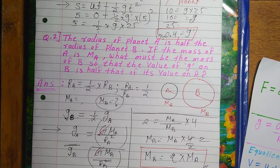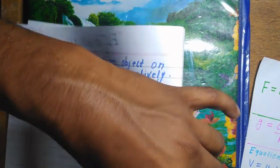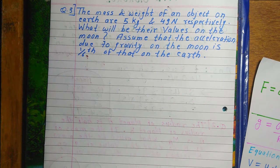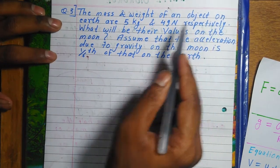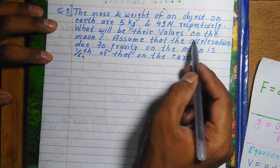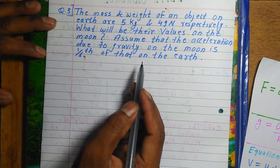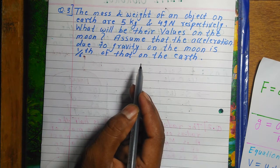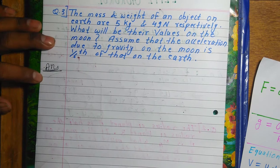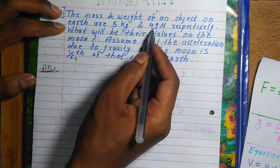After understanding Question 2, we will solve Question number 3. Question number 3 says: The mass and weight of an object on Earth are 5 kg and 49 Newton respectively. What will be their values on the Moon? Assume that the acceleration due to gravity on Moon is 1/6th of that on Earth — which is indeed the case.